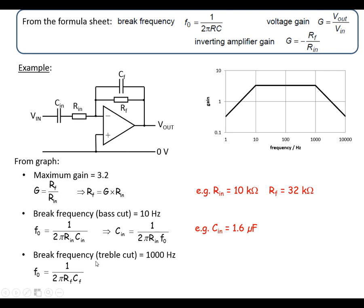And we'll do the same for the treble cut filter. Rearrange that. The feedback capacitor is going to be 1 over 2πRF, where we're using 32 kΩ and 1 kHz. If we put those values in, we should end up with 5 nF.